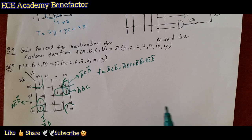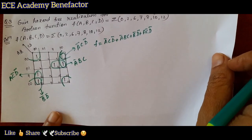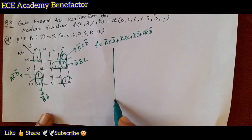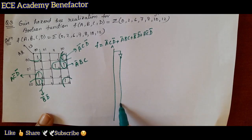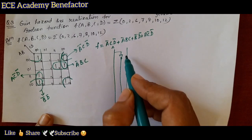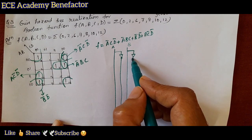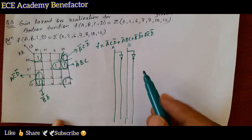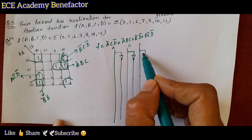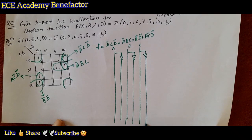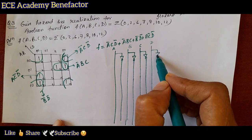So the full expression is f = ācd̄ + ābc + b̄d̄ + ac̄d̄. Now let us draw the logic circuit. We require four input variables a, b, c, d and their complements: ā, b̄, c̄, d̄.